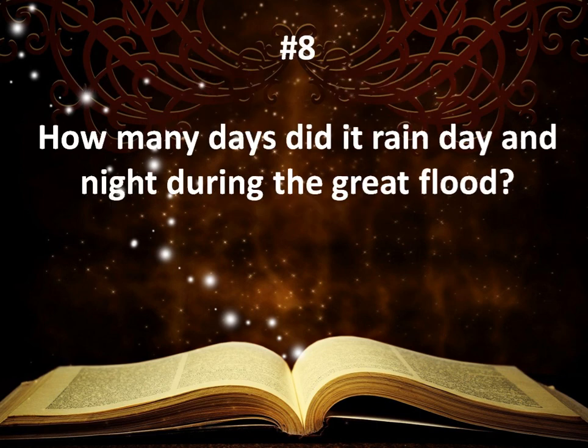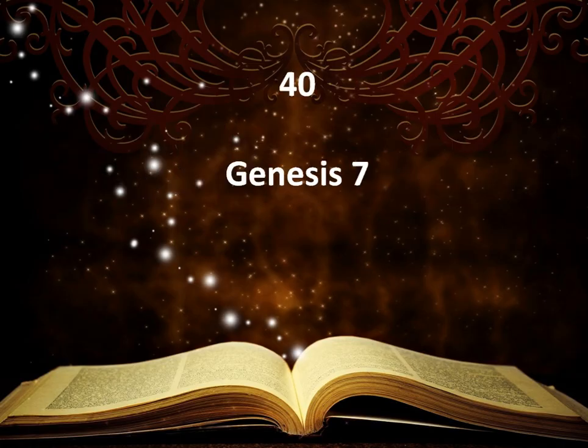Number eight: How many days did it rain day and night during the great flood? The answer is 40. Genesis 7.